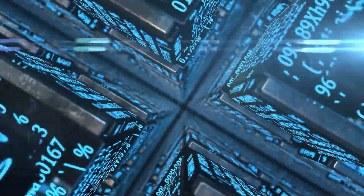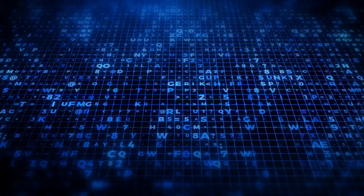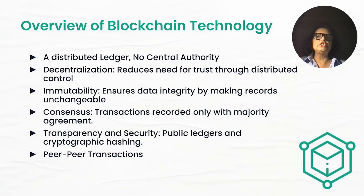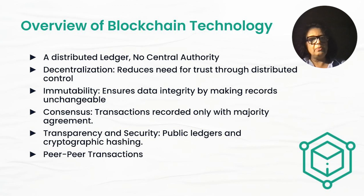It's a distributed ledger, a distributed database with no central authority. Because it's decentralized, it reduces the need for trust due to the distributed control — it's not controlled by one entity. It's immutable: once the data is stored, it cannot be changed. Data is stored through consensus, meaning all the nodes where the data is stored have to be in agreement. Transparency and security are achieved through cryptography, enabling peer-to-peer transactions.